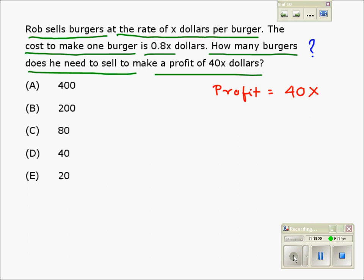It is given in the question that he sells a burger for X dollars, out of which 0.8X is the cost. The remaining will be his profit, which will be 0.2X.